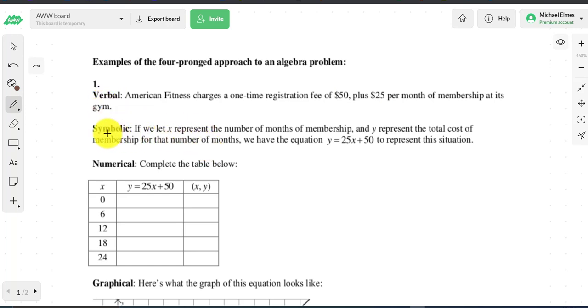We can also describe the problem symbolically. Y would be the total cost of the membership equals $25 for every month that you're joined. So if you're there five months, it'd be 25 times 5. If you were there two months, it'd be 25 times 2. And then don't forget to add the $50 initiation fee.